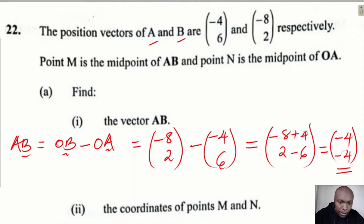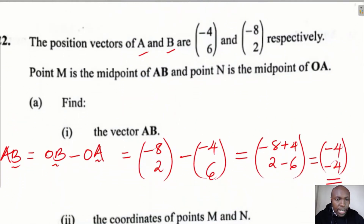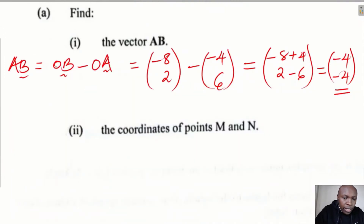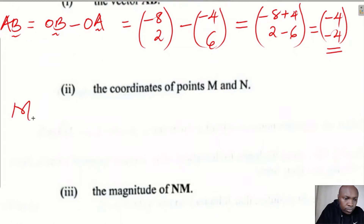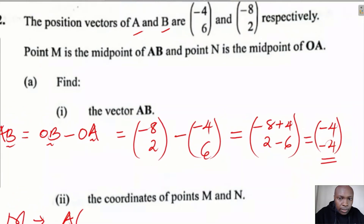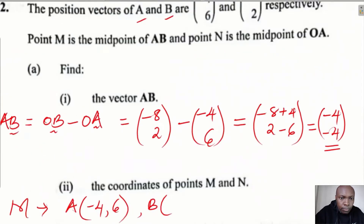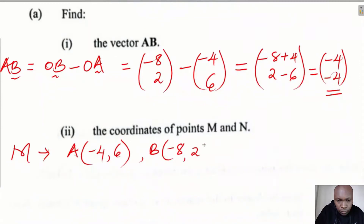Now let's find the coordinates of points M and N. Point M is the midpoint of AB. To find M, we use the coordinates of A and B in coordinate form. A is (-4, 6) and B is (-8, 2). These are the coordinates we'll use to find the midpoint M.